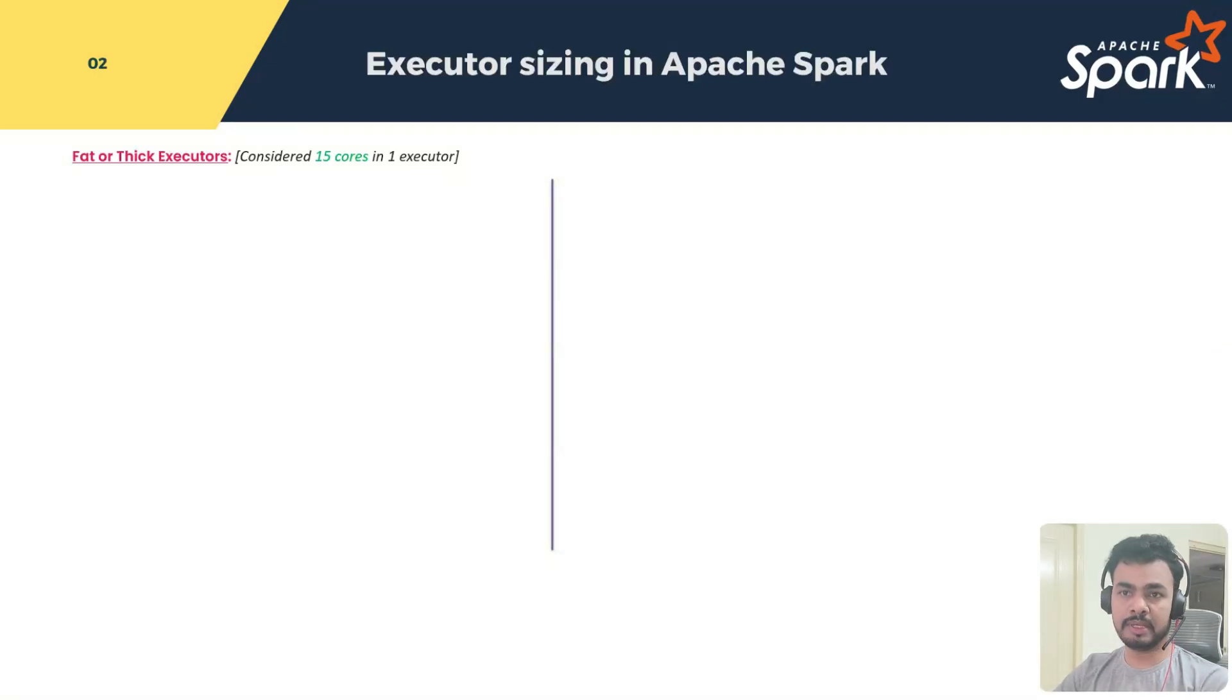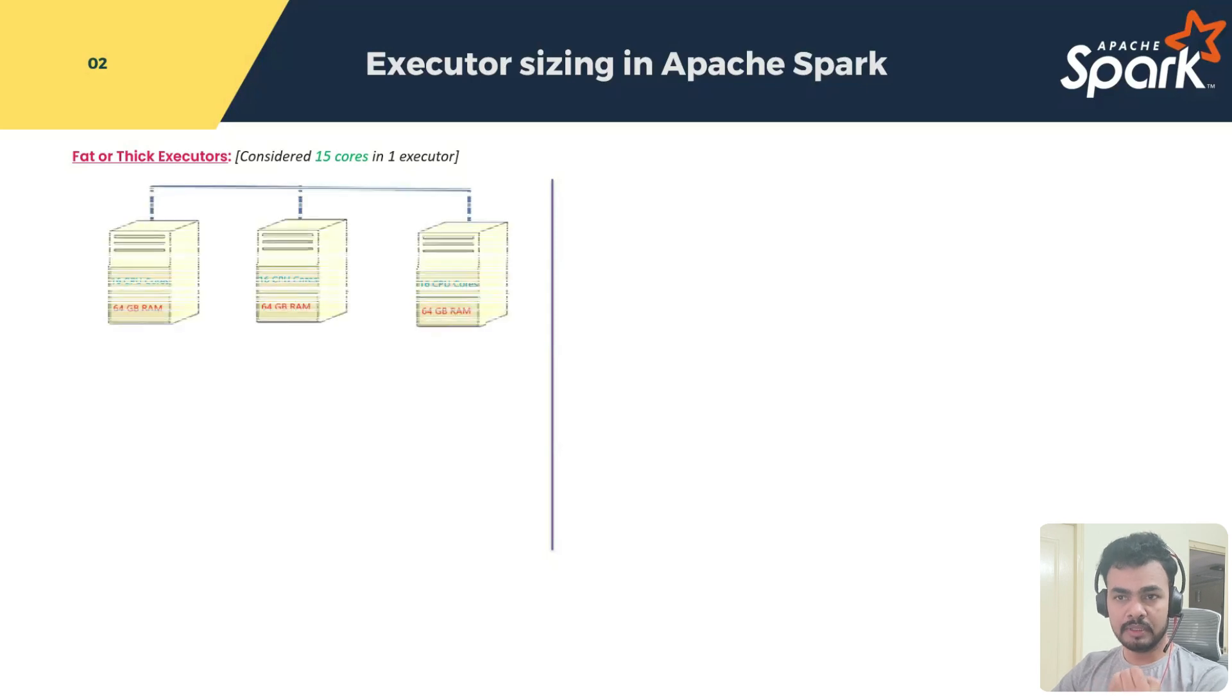Fat or thick executors. What does it mean? I will come to that point - considered 15 cores in one executor. Let's take a three node cluster. If we have a three node cluster, I just assumed 16 CPU cores and 64 GB RAM. This configuration is same for three nodes in the cluster. I just taken this example to demonstrate you in real time.